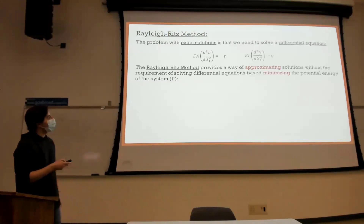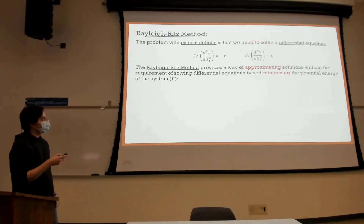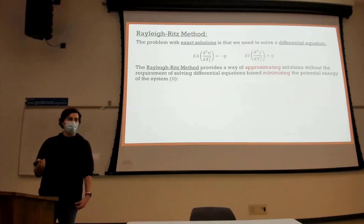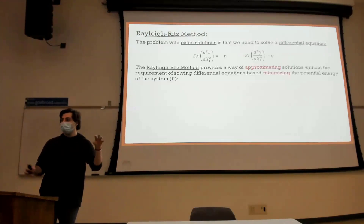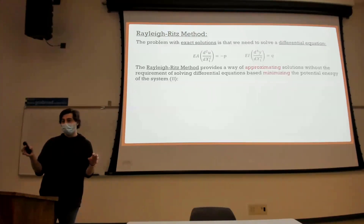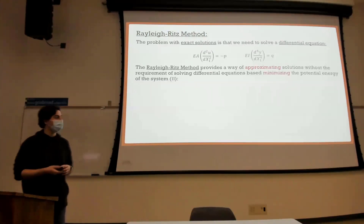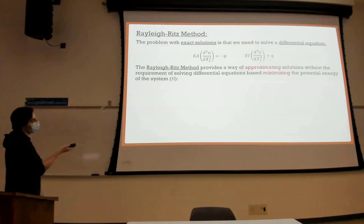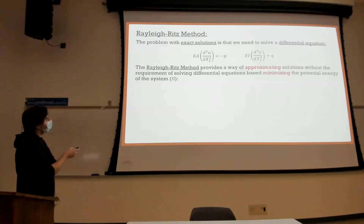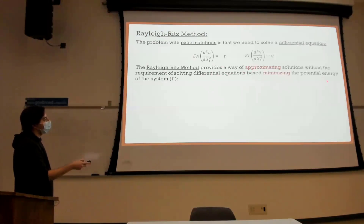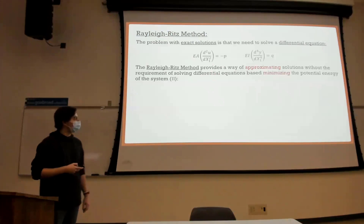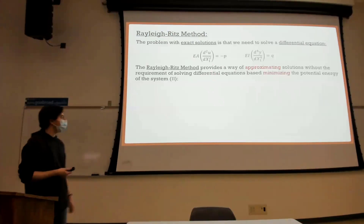More often than not, exact solutions aren't polynomials — they may involve radicals. If I'm using a polynomial to approximate a radical, could I ever get the exact solution? No. But I can get very close, and that's the goal. Now, unlike virtual work, the Rayleigh-Ritz method is actually based upon minimizing the potential energy of a system.